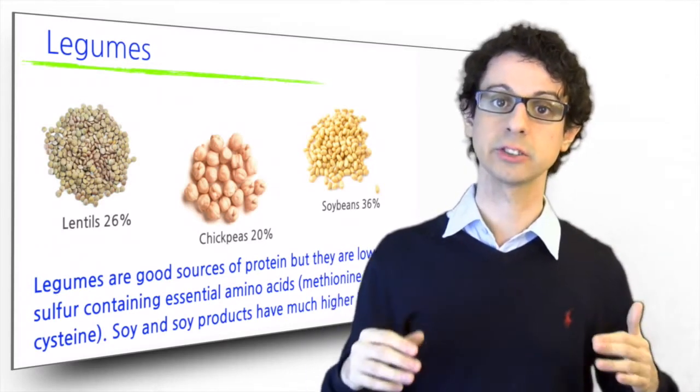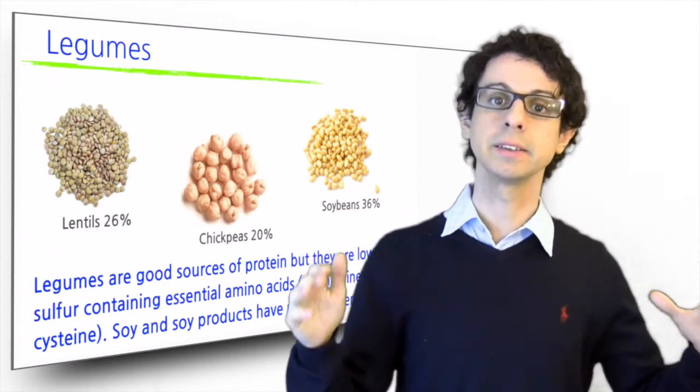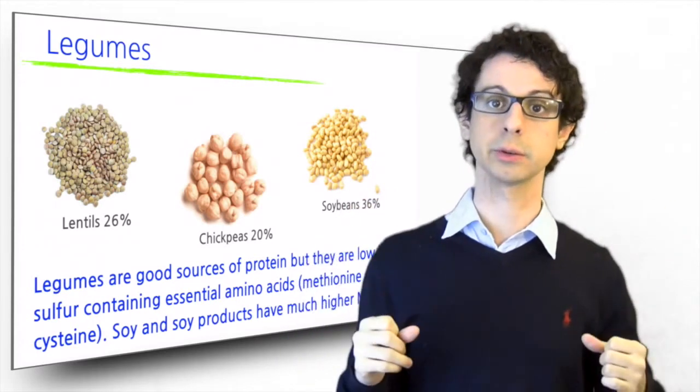Methionine, which is essential, and cysteine, which is conditionally essential. So just like grains, we could not rely on legumes alone as protein sources in our diet.